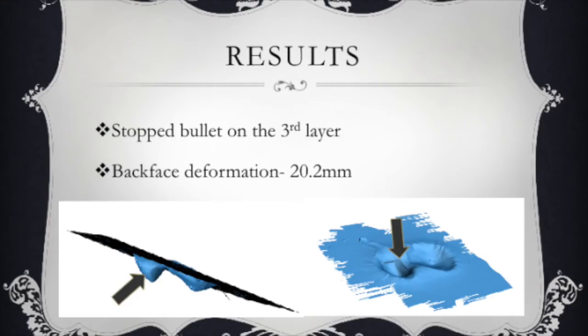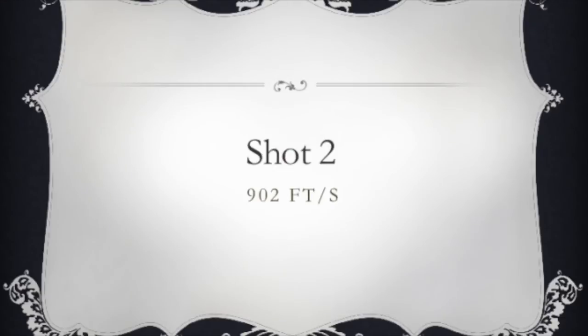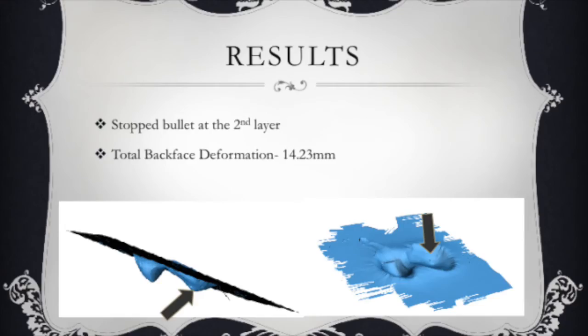Song lyrics playing over slow-motion ballistic test footage: "I was five and he was six. We rode on horses made of sticks. He wore black and I wore white. He would always win the fight. Bang, bang. He shot me down. Bang, bang. I hit the ground. Bang, bang. That awful sound. Bang, bang. My baby shot me down."